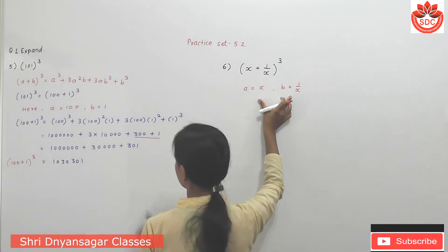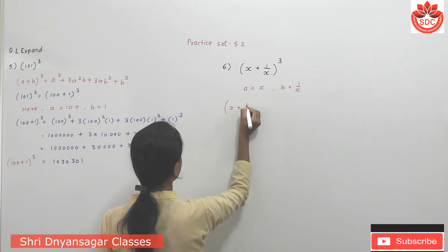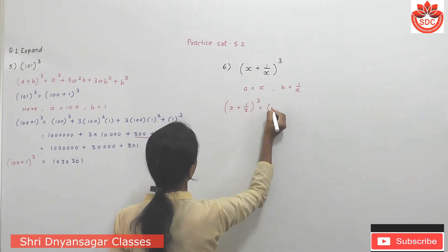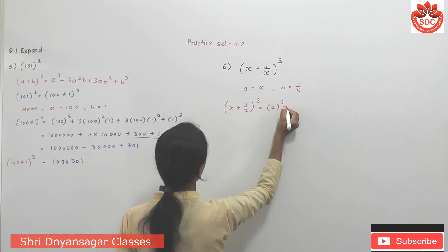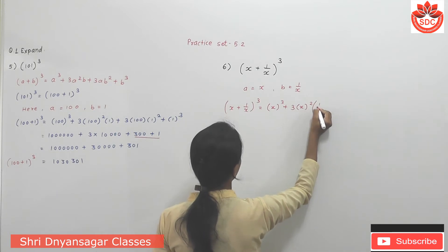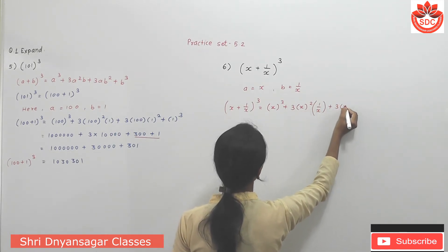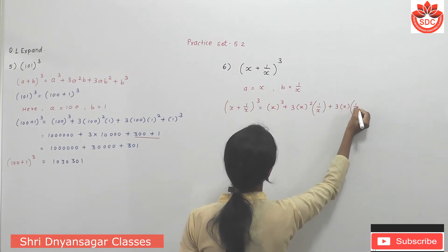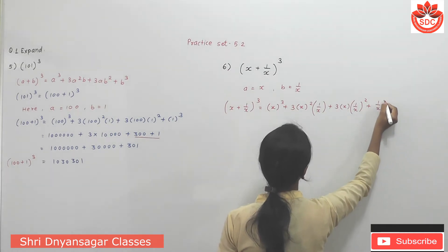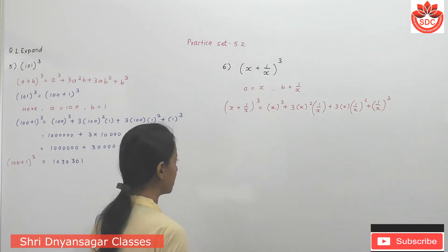Putting the values in the expansion formula, we get (x + 1/x)³ = x³ + 3x² × (1/x) + 3 × x × (1/x)² + (1/x)³. Then simplify it.